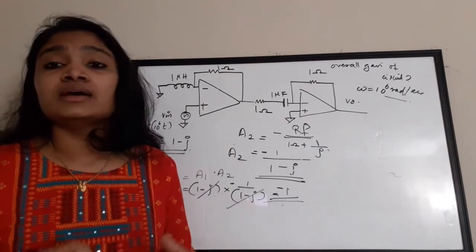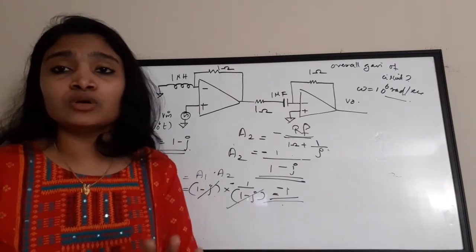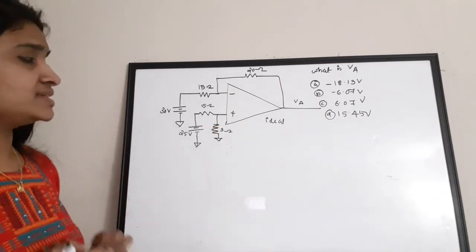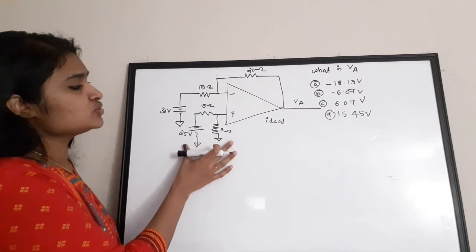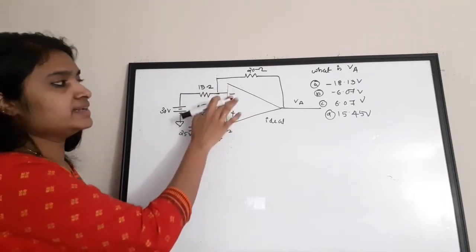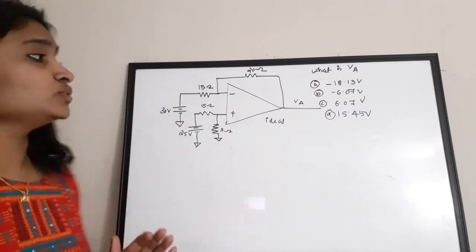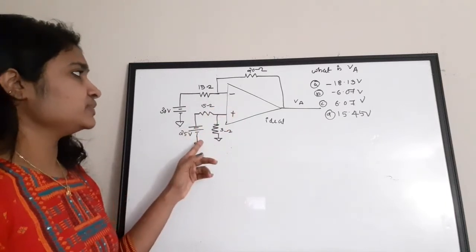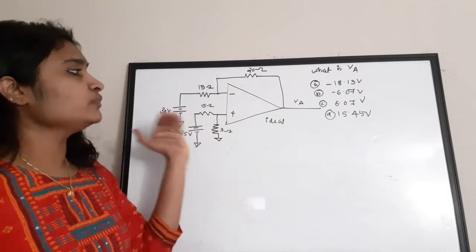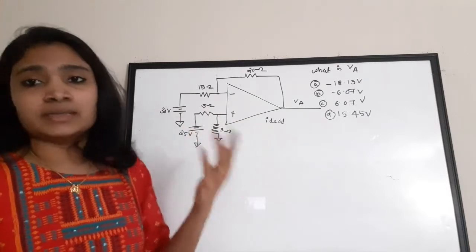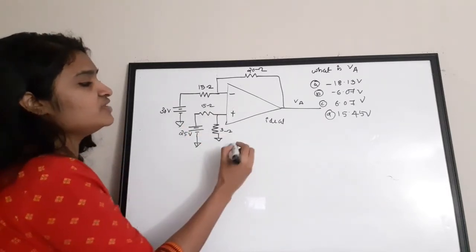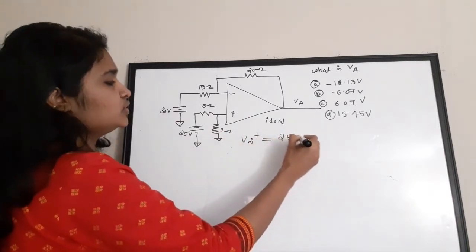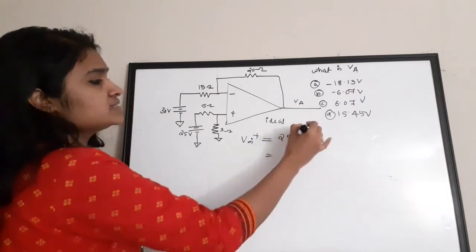The next question asks for the output voltage Va of a slightly more complex circuit. There are two voltage sources: 25V connected to the non-inverting terminal side and 30V connected to the inverting terminal side. We need to find the voltages at the positive and negative input terminals.